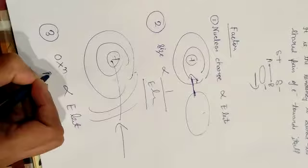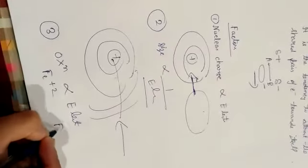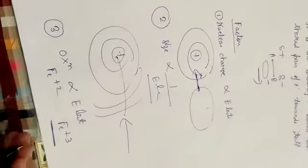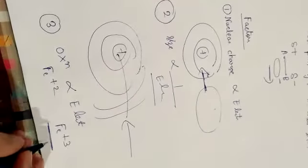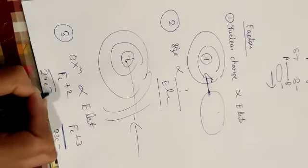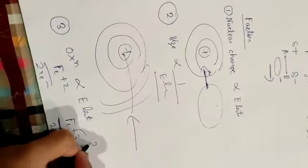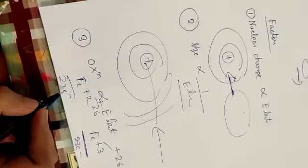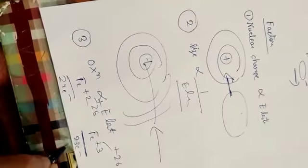For example, one is Fe2+ and one is Fe3+. In this case, the number of electrons is less than 26. Here are 23 electrons and here are 24 electrons. Atomic number is 26, protons are 26. Here are 26 protons and here are 23 electrons.